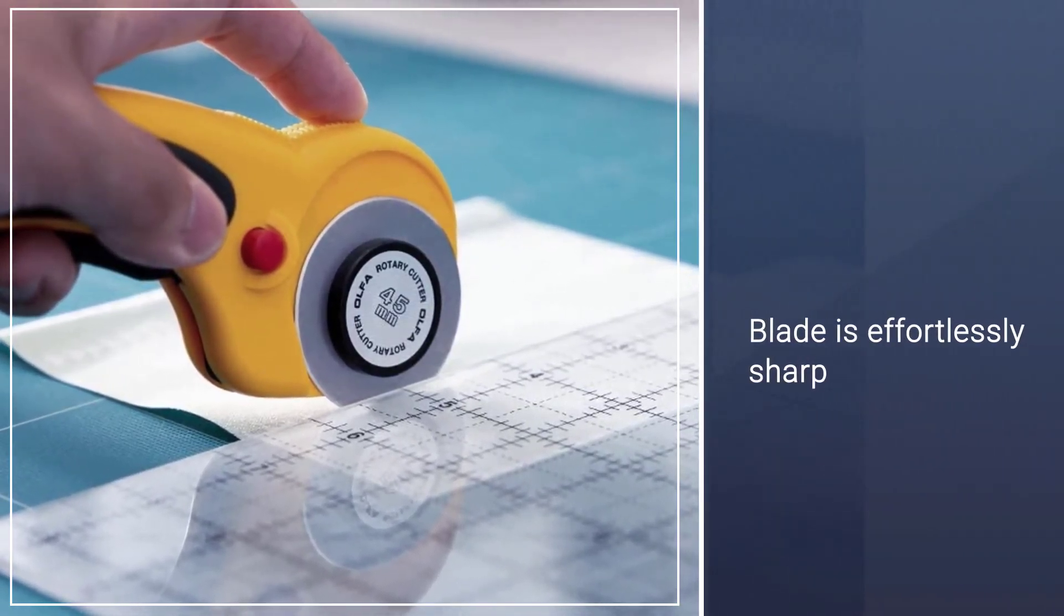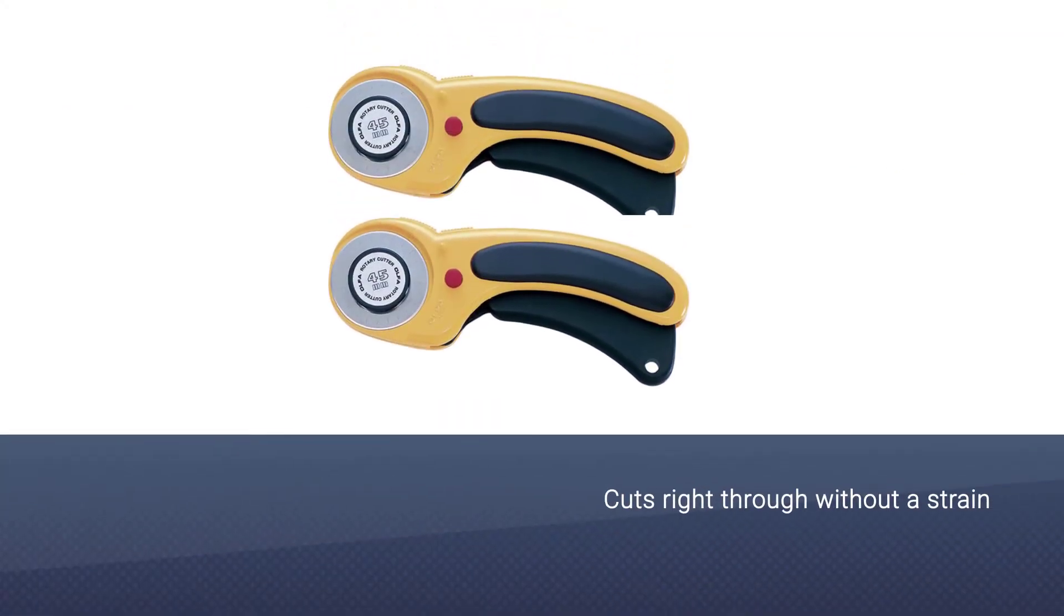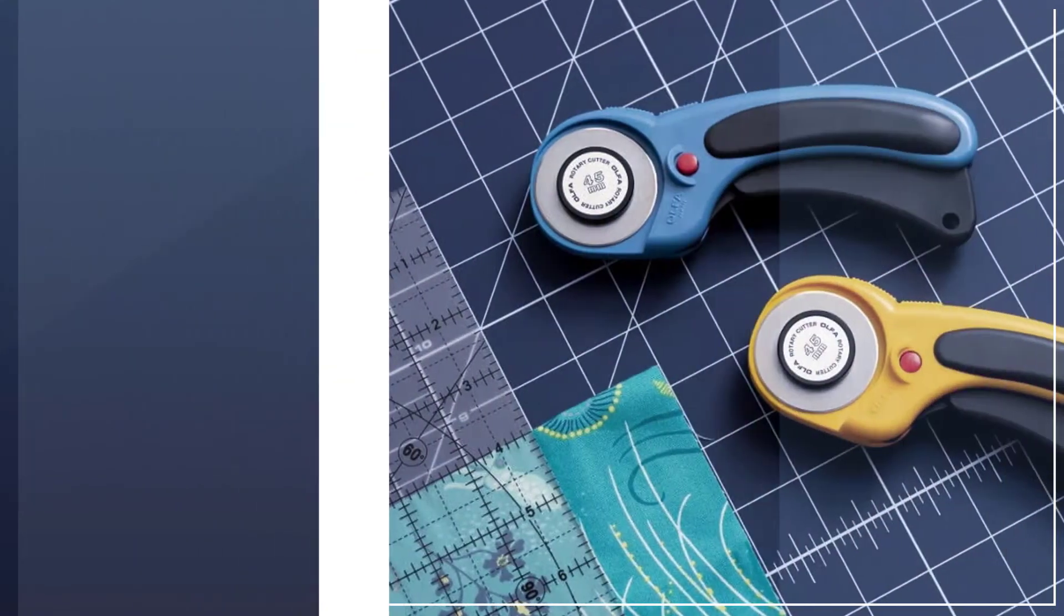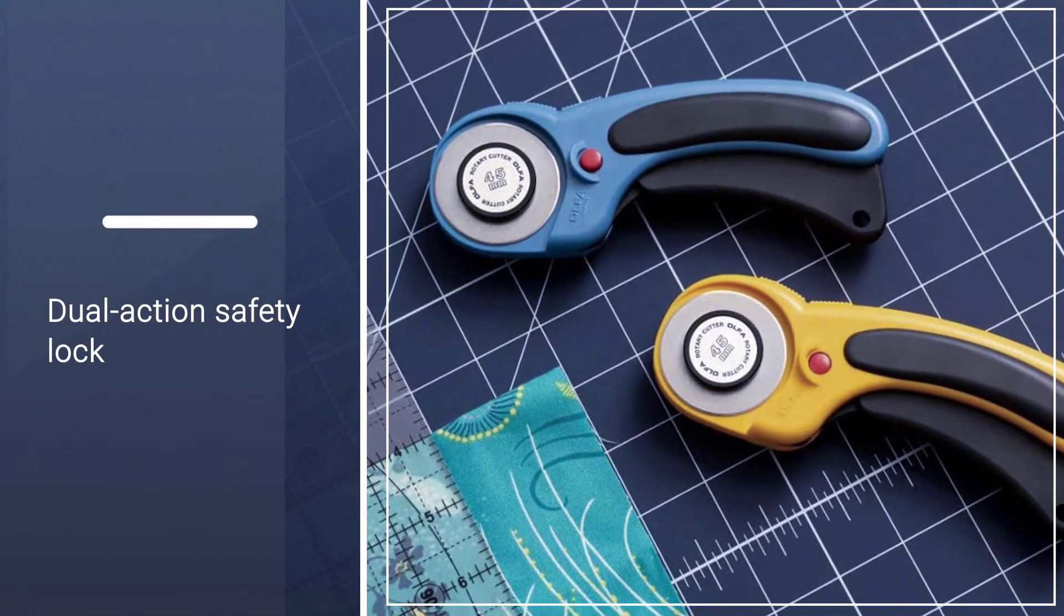The RB45 blade is effortlessly sharp to cut through most types of fabrics. With cotton, one of the most common in sewing, it can go through six layers like a knife on butter.